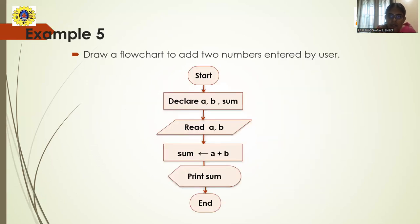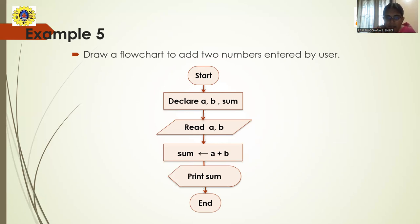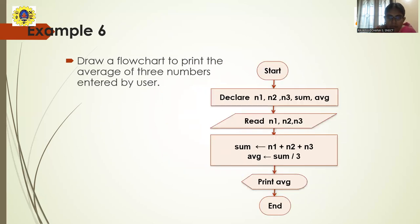This next example is the simplest one: addition of two numbers. All you need to do is read two numbers A and B, then calculate the sum as: sum = A + B, and finally print the sum. The flowchart for calculating the sum of two numbers follows the same structure.